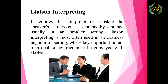We have liaison interpreting. Liaison interpreting requires the interpreter to translate the speaker's message sentence by sentence, usually in a smaller setting. It is most often used in a business negotiation setting where key important points of a deal or contract must be conveyed with clarity.